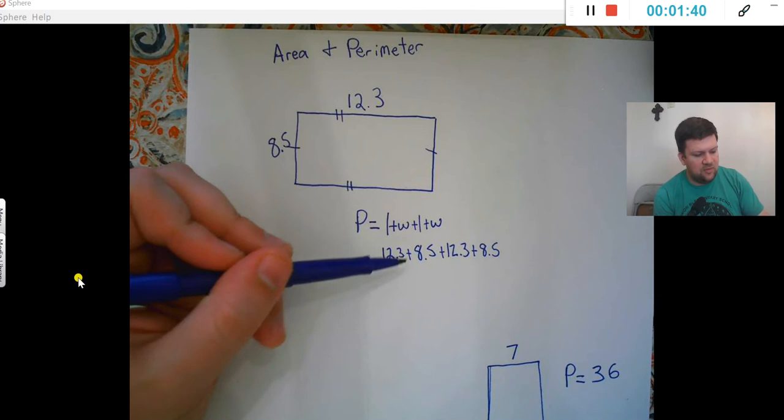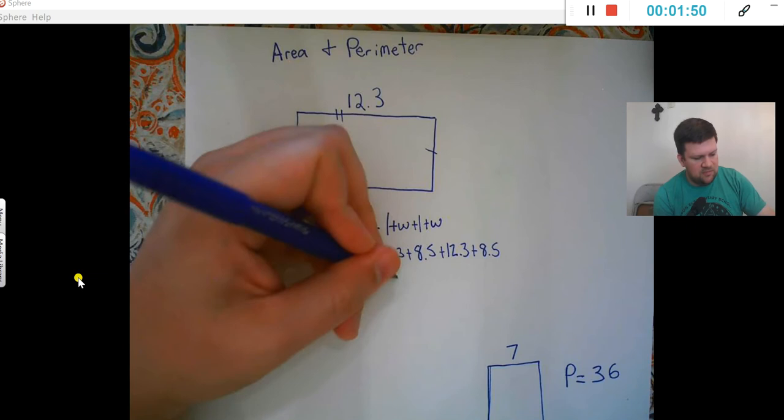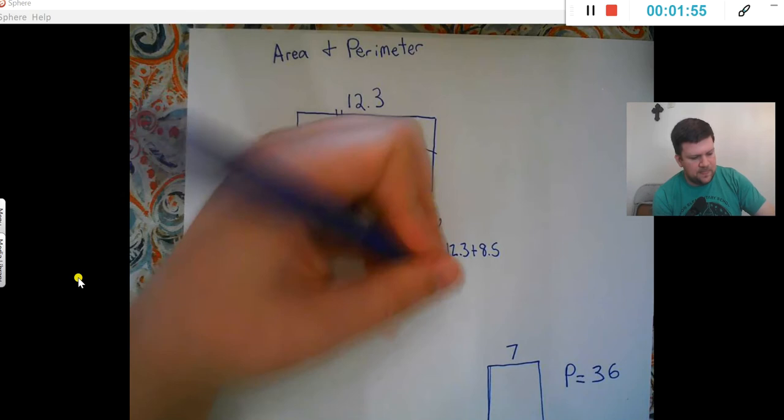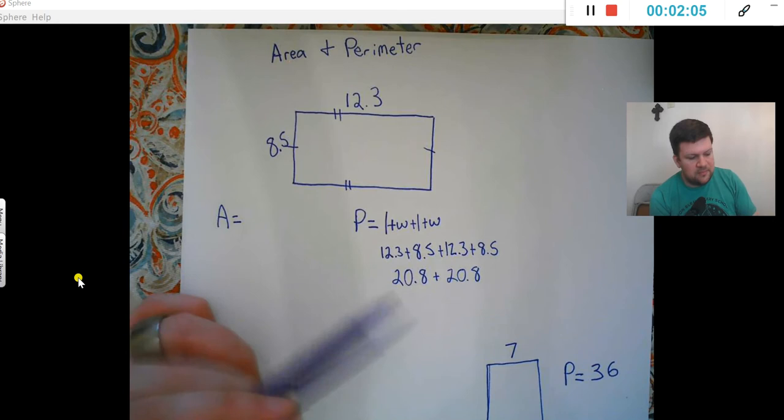So I'm just adding that together however you want to add it up. Probably what I would do is do 12.3 plus 8.5, which would give me 20.8 and then doing that there would be 20.8 again. Then you can stack and add just however you want to add those up.